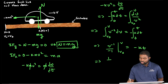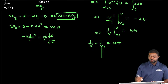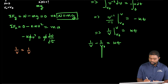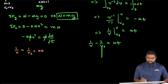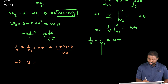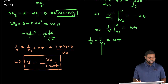In other words, we have 1/v evaluated from v₀ to v equals kt. This means 1/v minus 1/v₀ equals kt. Solving for v, we get 1/v equals 1/v₀ plus kt, which equals (1 + v₀kt)/v₀. Therefore, v equals v₀ divided by (1 + v₀kt). This gives us the expression for velocity as a function of time.